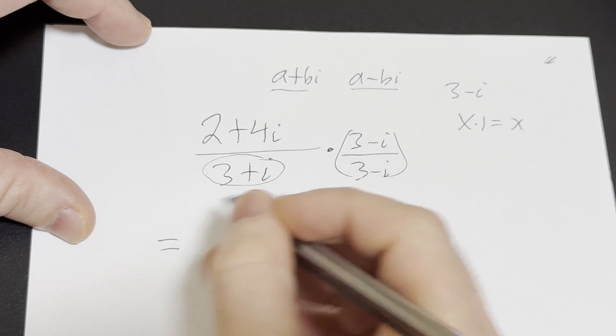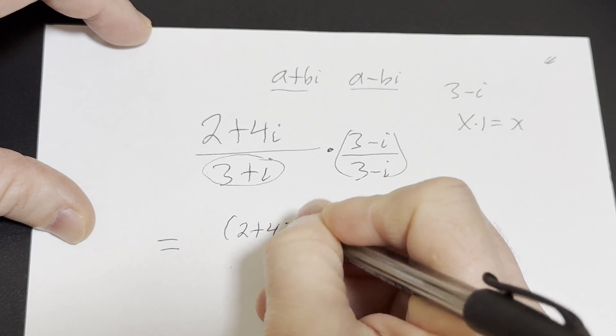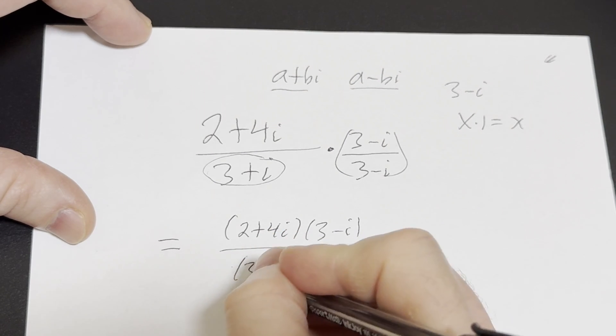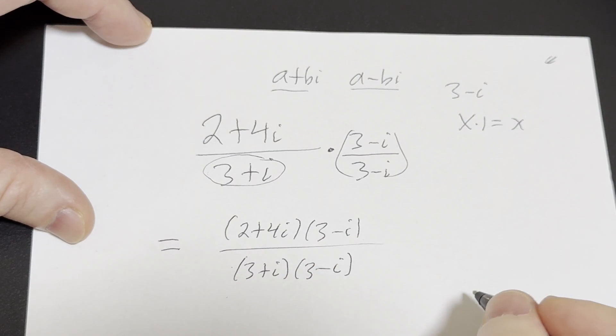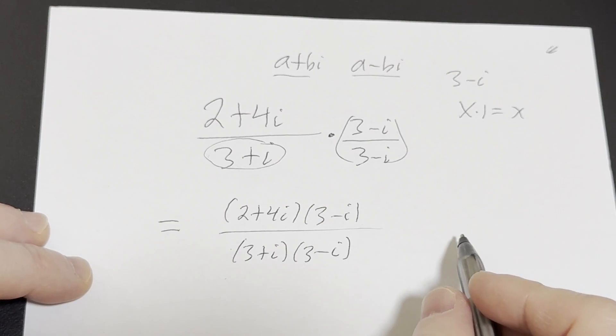So now this is equal to, in the numerator I'm going to leave it like this, 2 plus 4i, 3 minus i. Write it as a single fraction and in the denominator we have 3 plus i, 3 minus i. So all I've done now is actually perform the multiplication without actually doing any distribution.